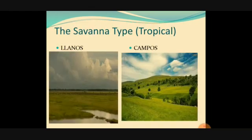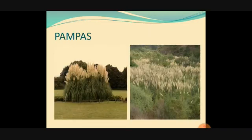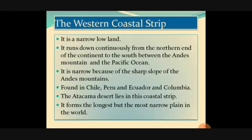These are the important grassland types to learn: Llanos, Campos, and Pampas. These are different grasslands found in South America. Now the last portion is the Western Coastal Strip of South America.